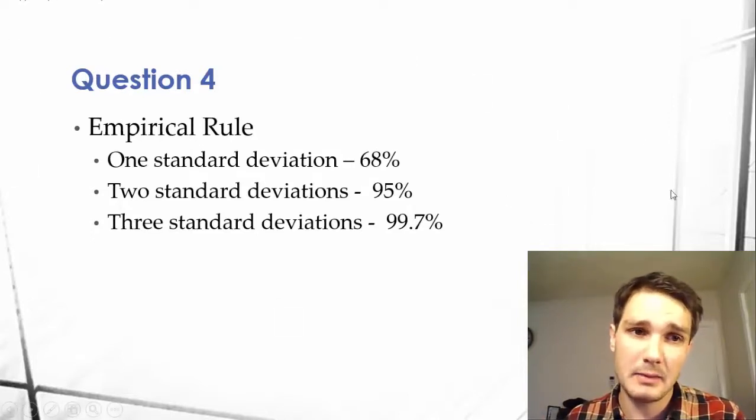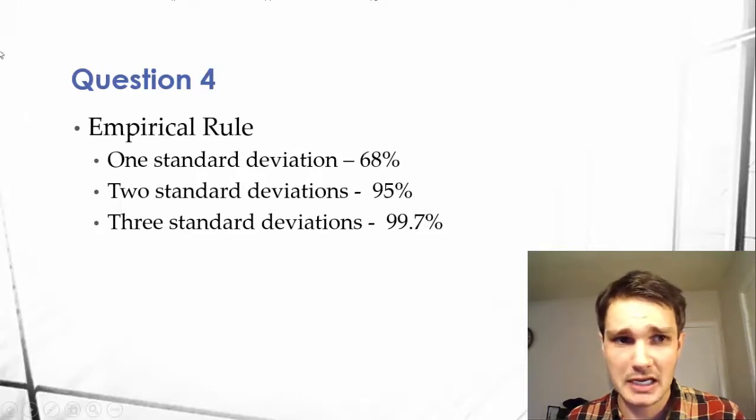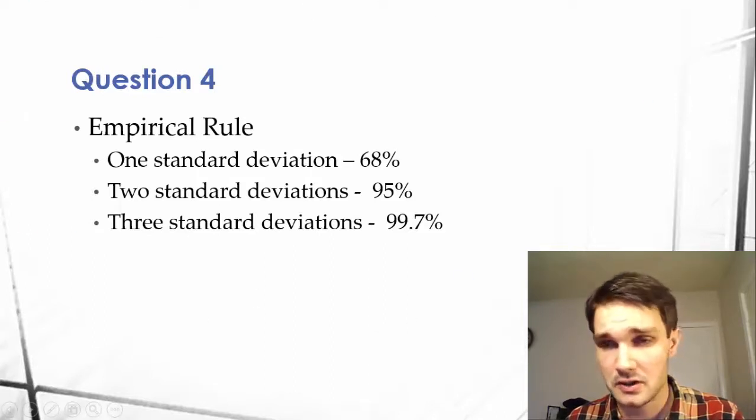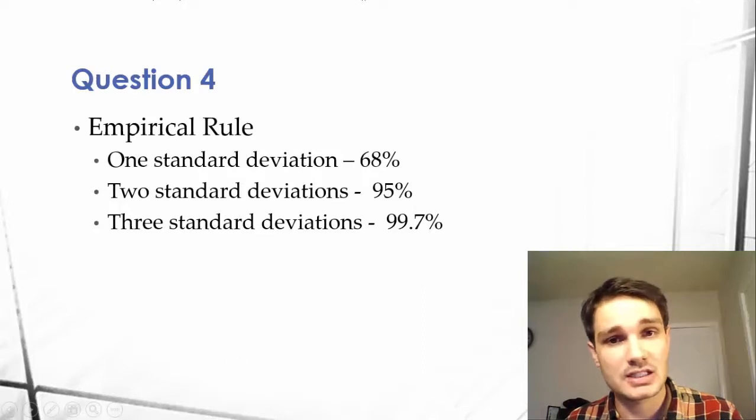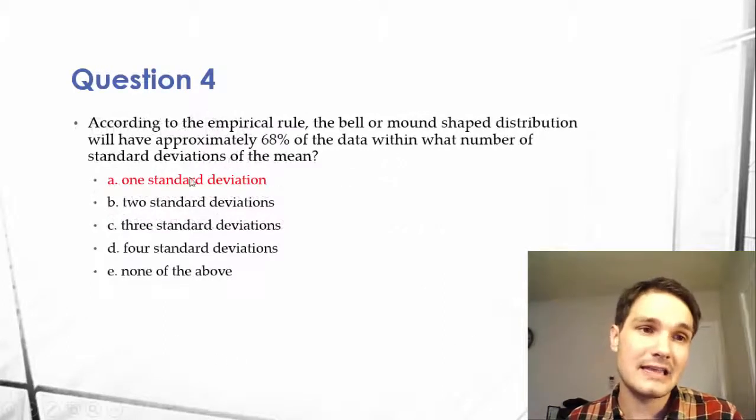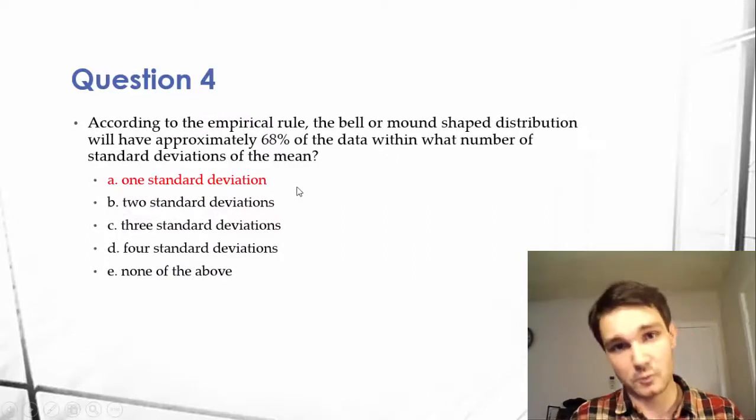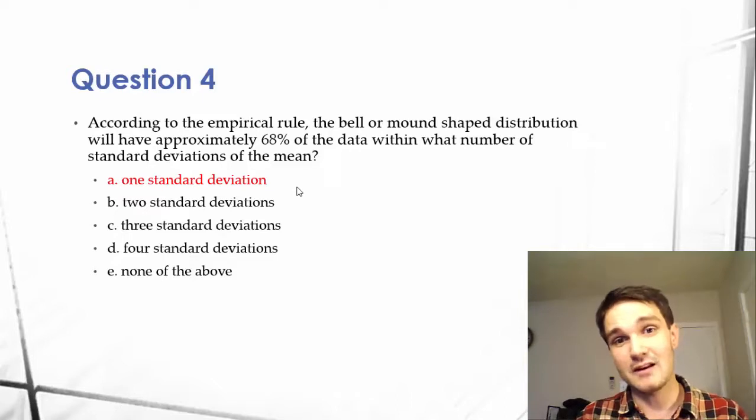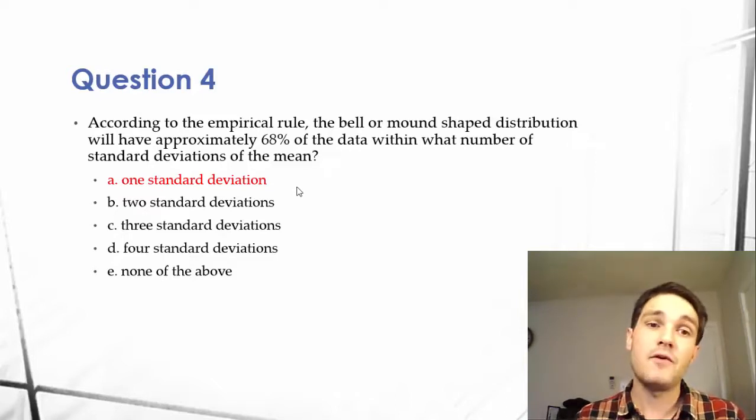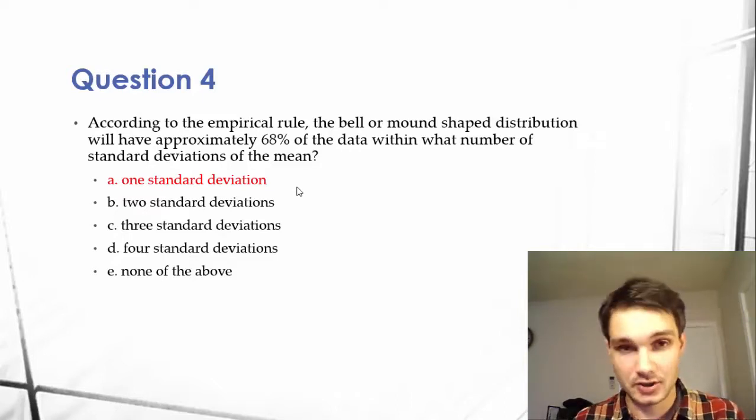It'll show up again in business statistics or in a lot of other classes, including advanced accounting classes. So just get this one down. You can see that the answer would be one standard deviation because we memorized that rule, that 68% of data on a normal distribution falls within one standard deviation.